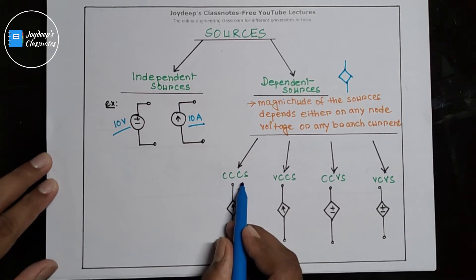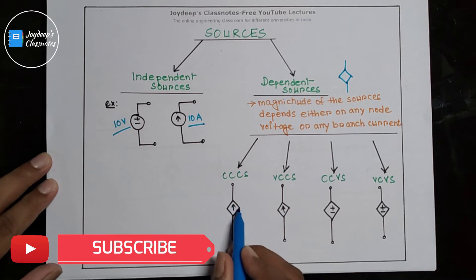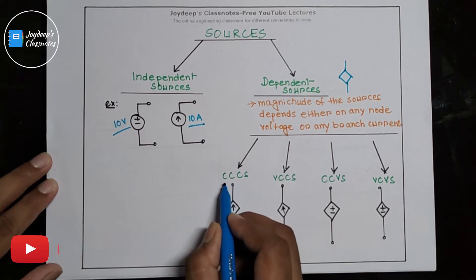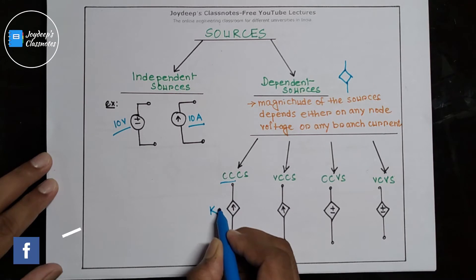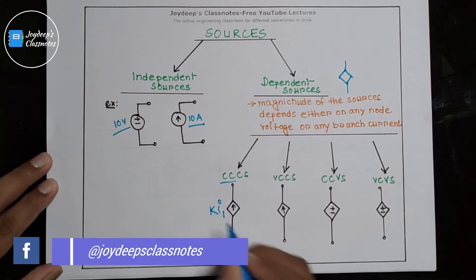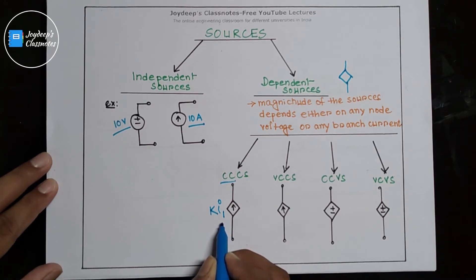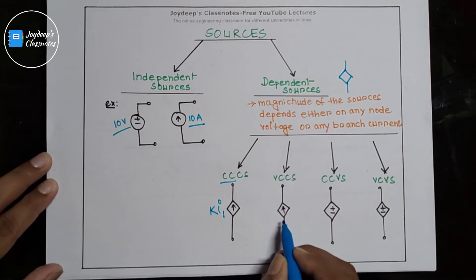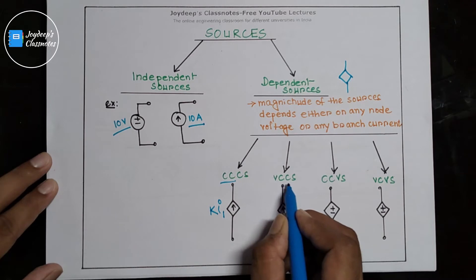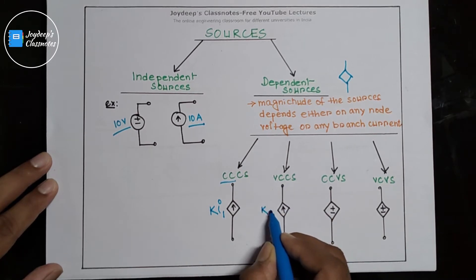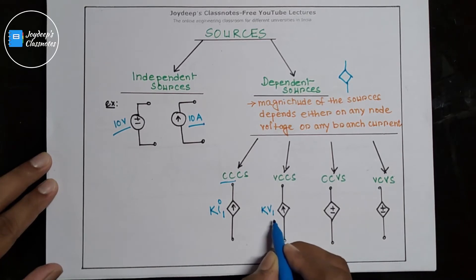Current controlled current source is a dependent current source — denoted by a diamond shape — and is current controlled, meaning the magnitude of this source depends on a current value. The magnitude depends on I1, which is any branch current in the circuit. There is also a voltage controlled current source, where the magnitude is K into V1, and V1 is any node voltage in the circuit. So the magnitude of this source depends on that voltage.